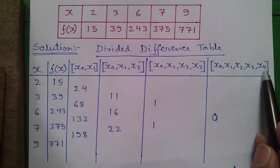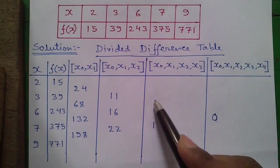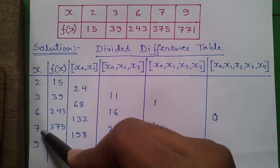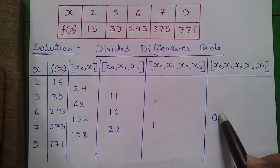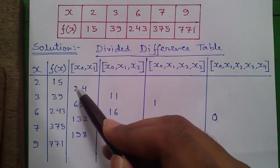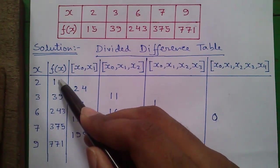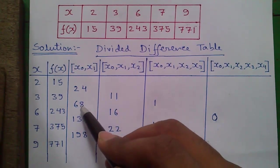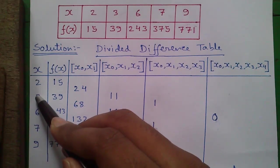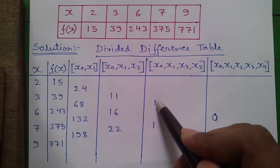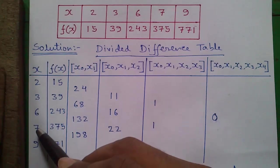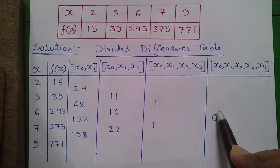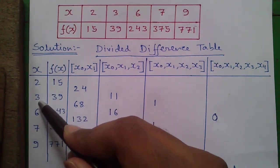And finally, for our next column, this number can be obtained by 1 minus 1 divided by 9 minus 2, with a gap of three numbers. So 1 minus 1 is 0 divided by 9 minus 2 — 0 divided by anything is 0. So the logic for making the table is: for the first column, we take no gap — this minus this divided by this minus this. For the second column, we take a gap of one number — 68 minus 24 divided by 6 minus 2. For the third column, we take a gap of two numbers — 16 minus 11 divided by 7 minus 2 — and so on. For the fourth column, we take a gap of three numbers, that is 9 minus 2 with three numbers gap.